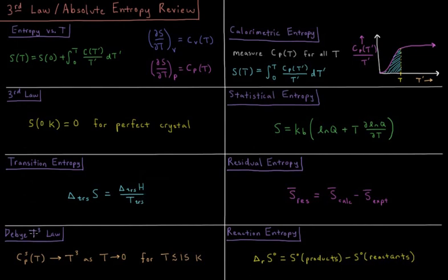The Debye T cubed law also tells us that the constant pressure heat capacity of a solid goes to approximately T cubed. The cube goes as the cube of the temperature as the temperature goes to zero. This is valid for temperatures that are below about 15 Kelvin.